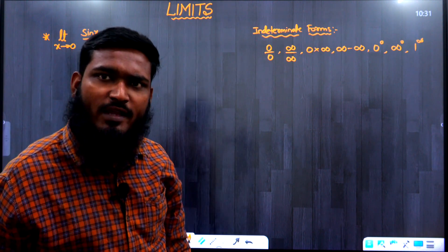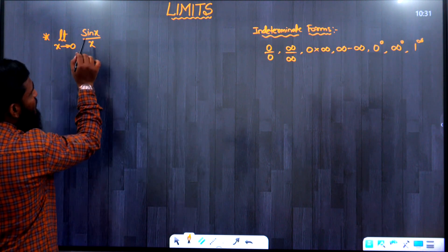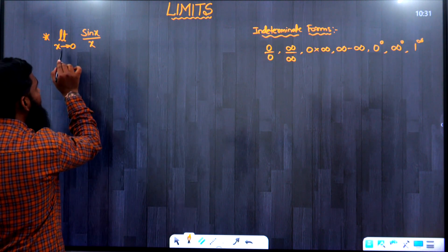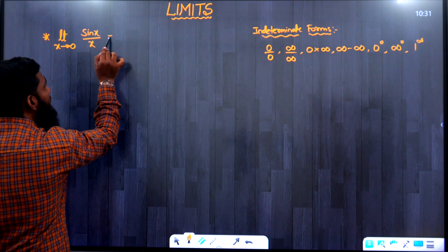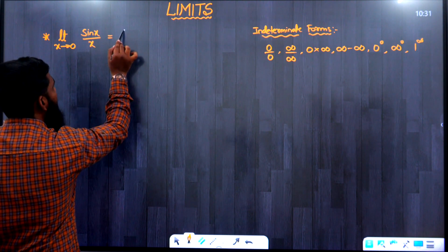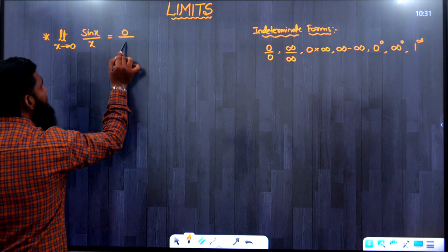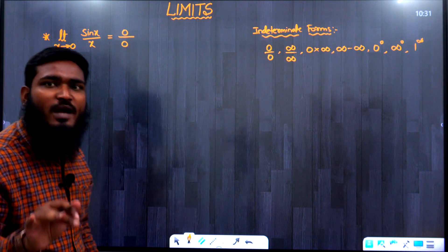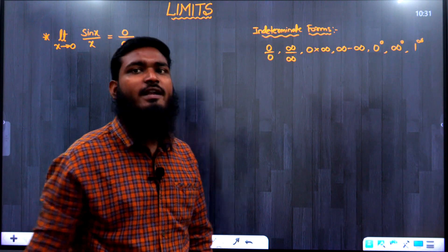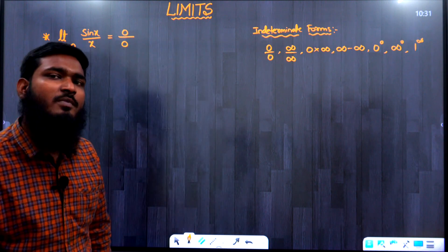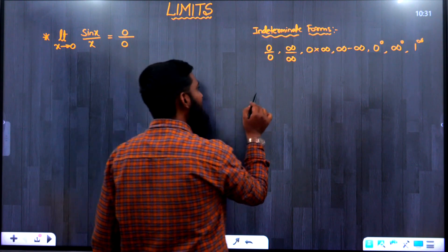For limit x tends to 0, sin(x)/x — if we substitute x = 0, sin(0) = 0 and x = 0, so we get 0/0, which is an indeterminate form. So we need to use another approach.